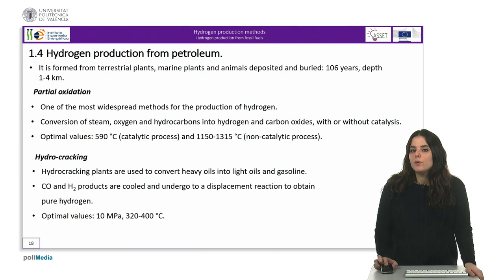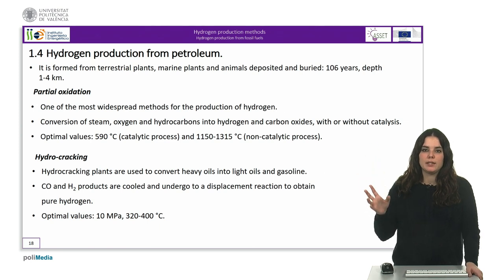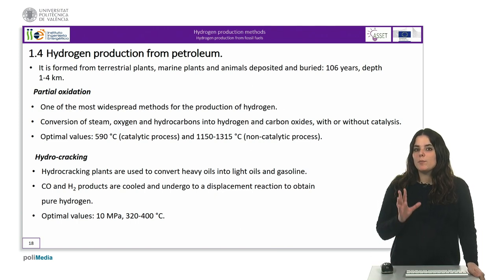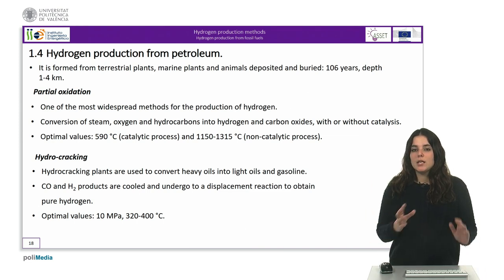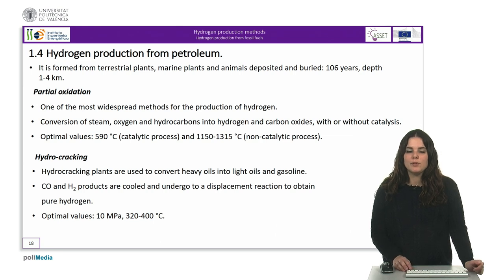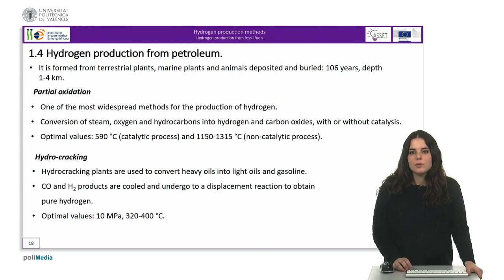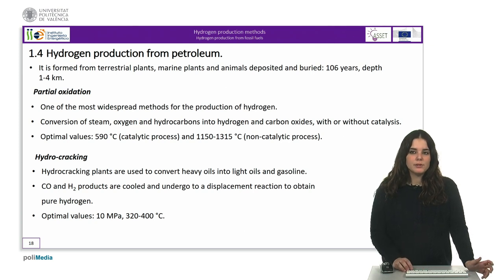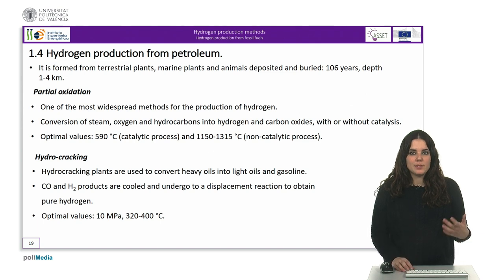The processes through which petroleum can be used to obtain hydrogen are partial oxidation and hydrocracking. Partial oxidation of heavy oils — particularly the remains of petroleum distillation — is one of the most widespread methods for hydrogen production. It consists of the conversion of steam, oxygen and hydrocarbons into hydrogen and carbon oxides, with or without catalysts. The catalytic process for light hydrocarbons operates at about 590 degrees Celsius, while the non-catalytic process can be used with heavy oils and coal at temperatures of around 1,150 to 1,315 degrees Celsius and pressures between 1 and 10 megapascals.